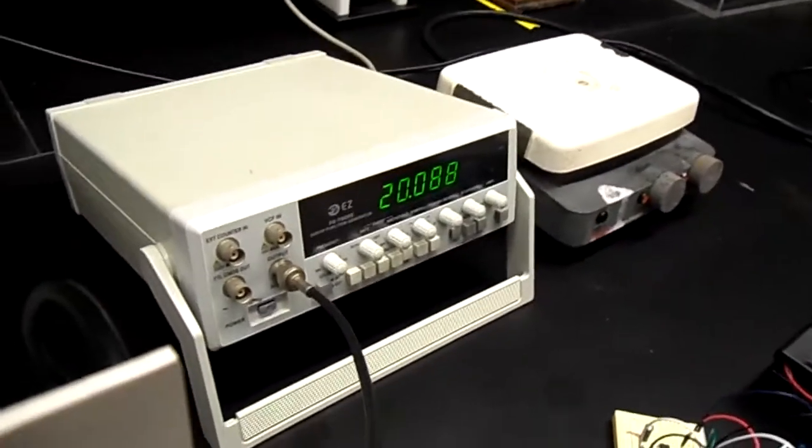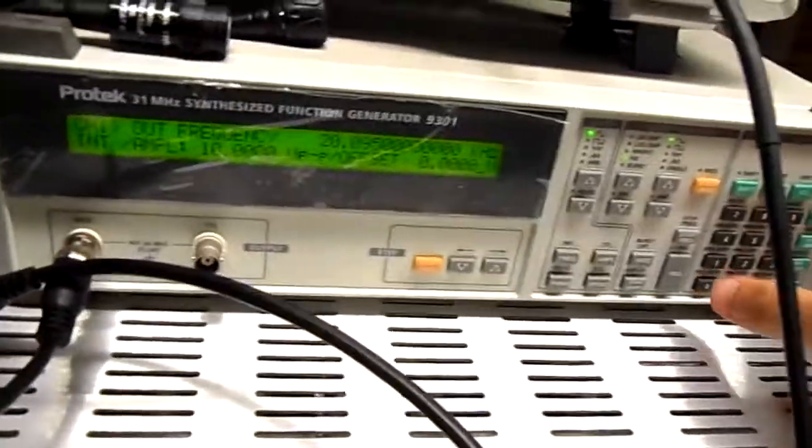Alright, so the easiest thing to do is to sort of let this old one drift where it's going to drift and then set the frequency on the digital one.